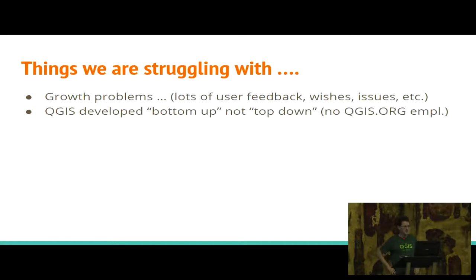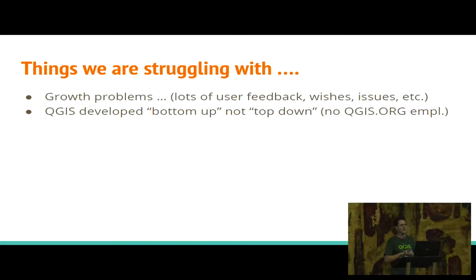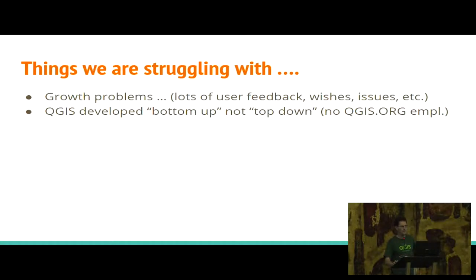One issue we have — it's not really a bad one, but it's quite different — is that QGIS is developed bottom-up, not top-down. It's not the PSC that decides what features the next version will have. It's you as the users who sponsor features. So we as the PSC don't know what will end up in the next couple of releases. Also, as a PSC we have no employees, so we can only try to make resources available to developers to fix issues.